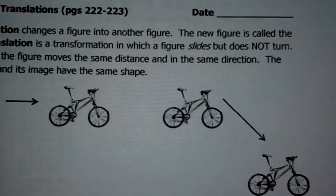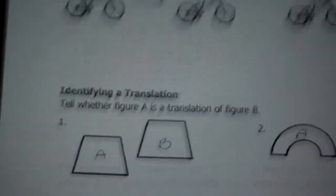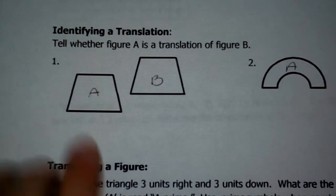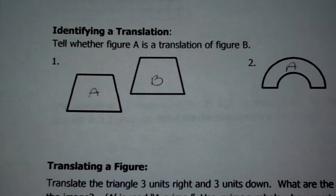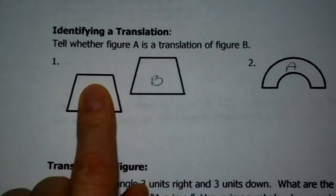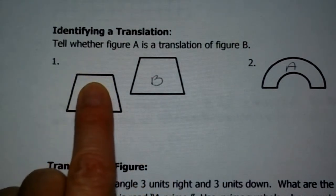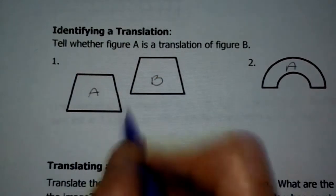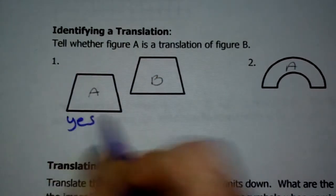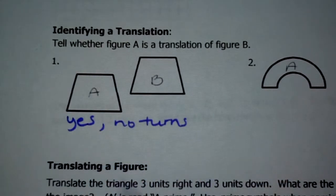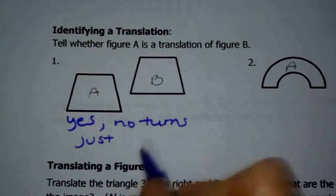First thing I want you to be able to do is look at an object and see if it's a translation or not. Tell whether figure A is a translation of figure B. Here's A, here's B. Does it look like I twisted or turned this? No — we just took it and slid it over there. So this is an example of a translation. Yes, there are no turns, just a slide.